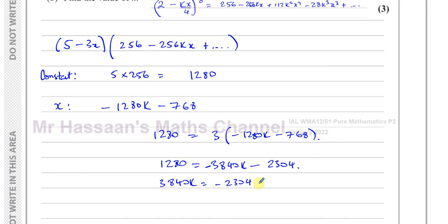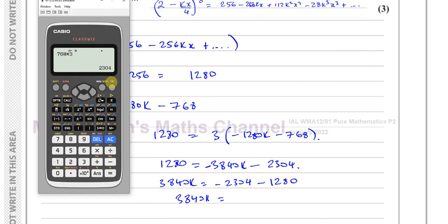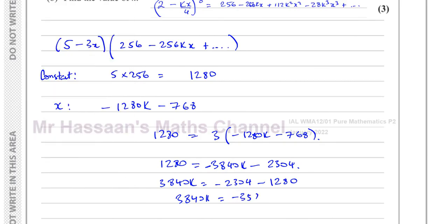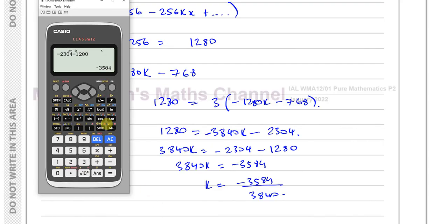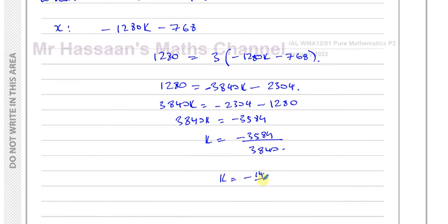Rearranging: 3840k = minus 2304 minus 1280, which gives minus 3584. Dividing both sides by 3840: k = minus 3584 over 3840, which simplifies to negative 14 over 15. So k equals negative 14 over 15.